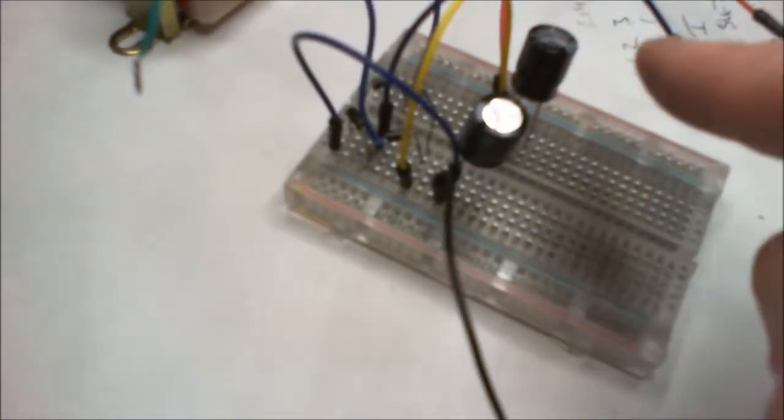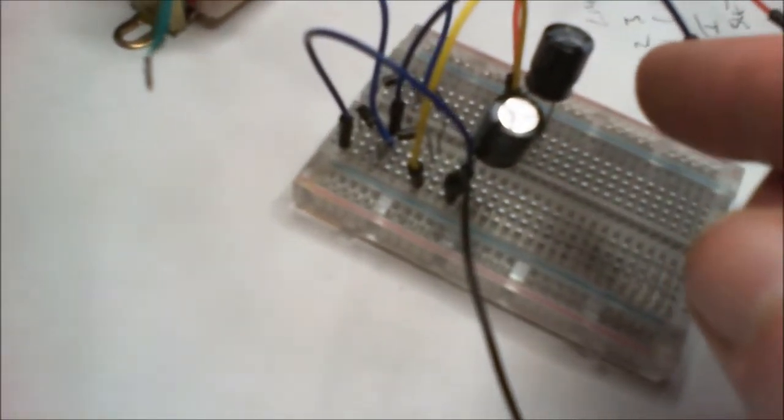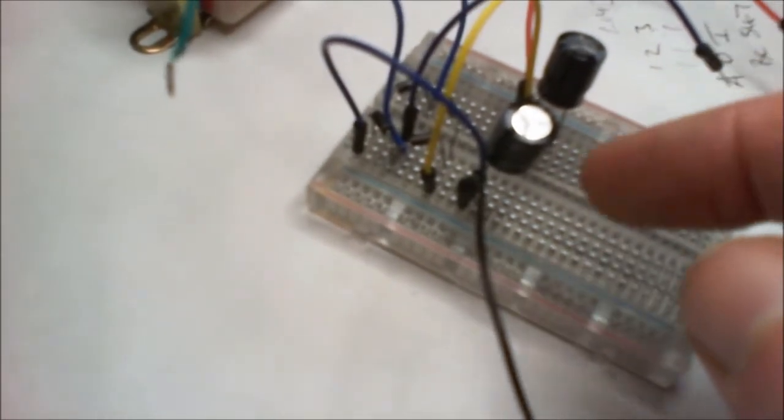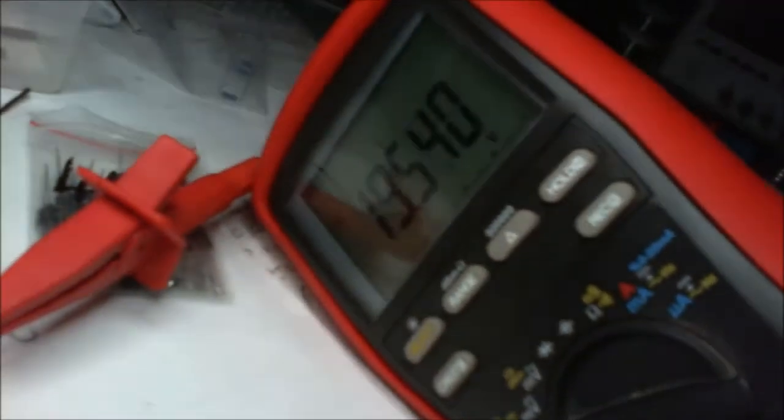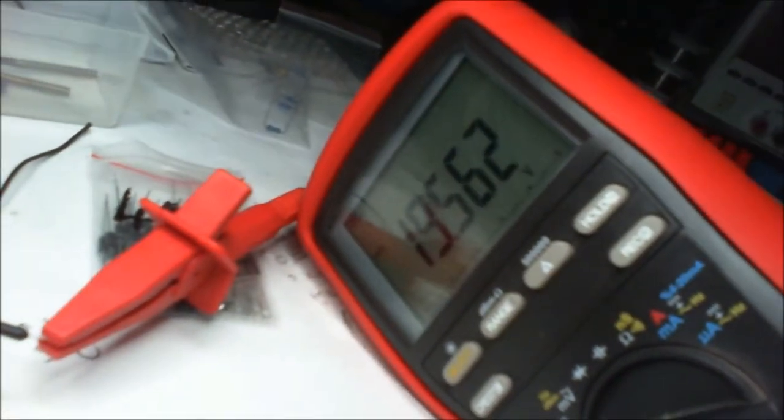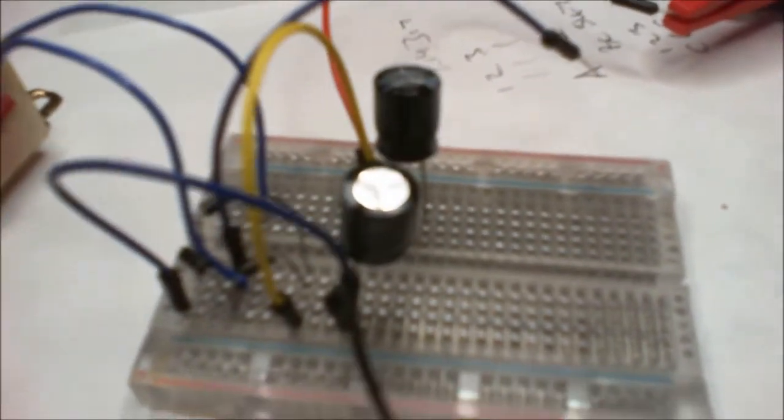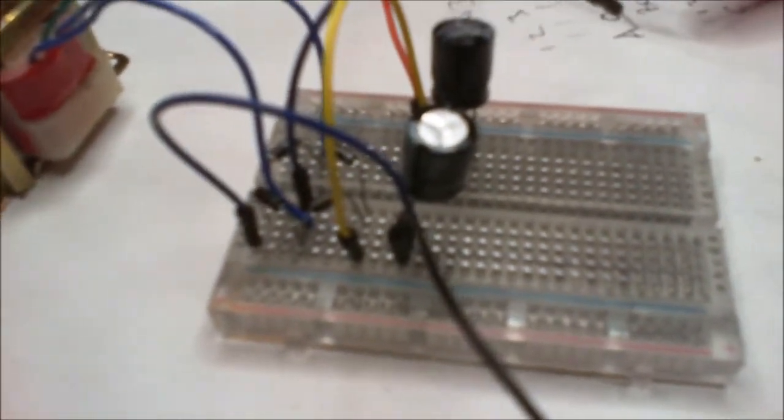What this will give us is basically two capacitors in series. What we will get is 14 volts once it's DC regulated. We're talking about 19 and a half, 20 volts. And if you can see that there, 19.5, yeah.